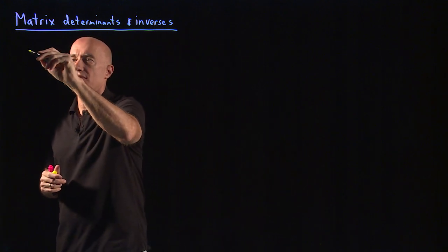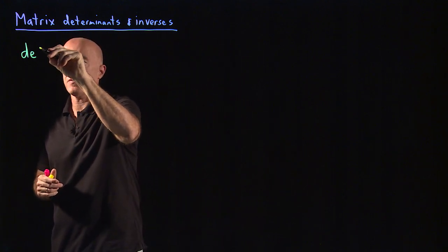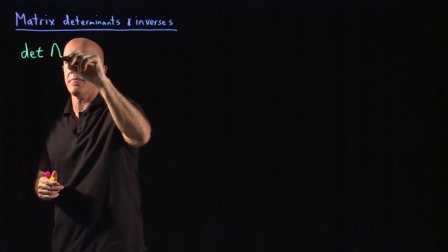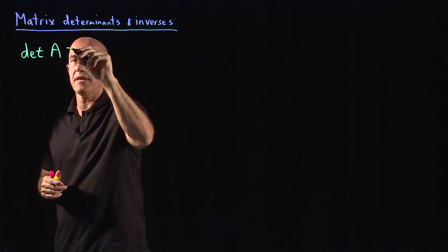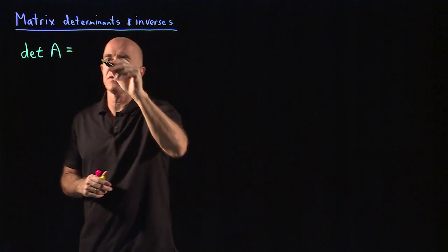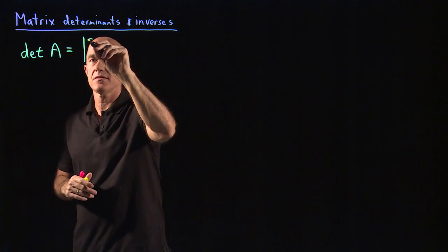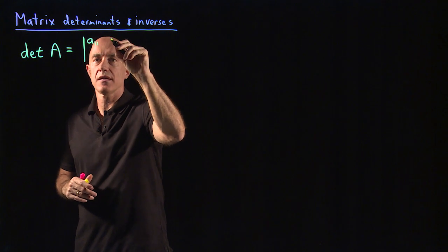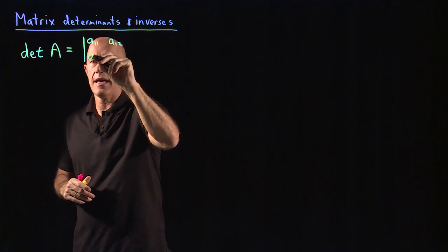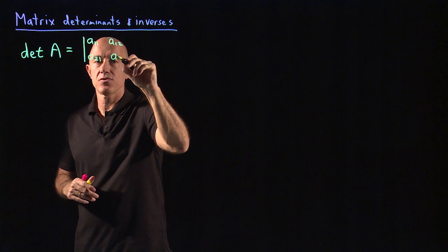So the determinant of a matrix, we write as determinant of the matrix A. If A is a two by two matrix, then we'll write this as these absolute value signs of A11, A12, A21, A22.